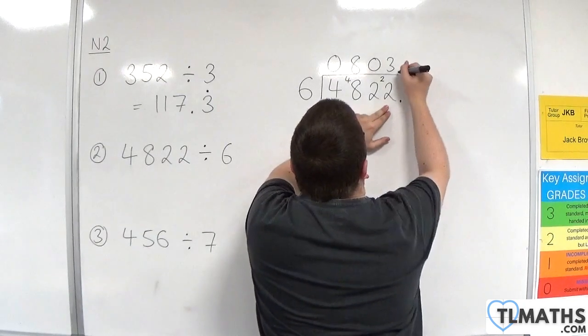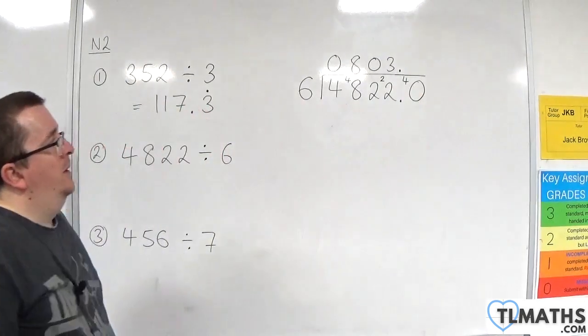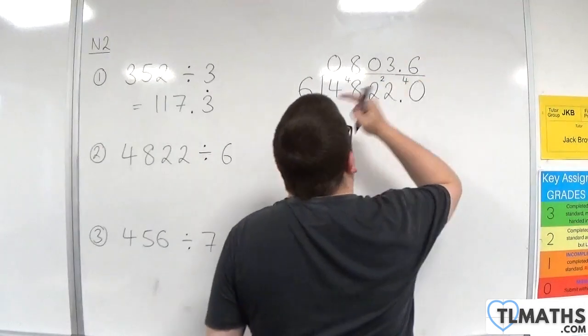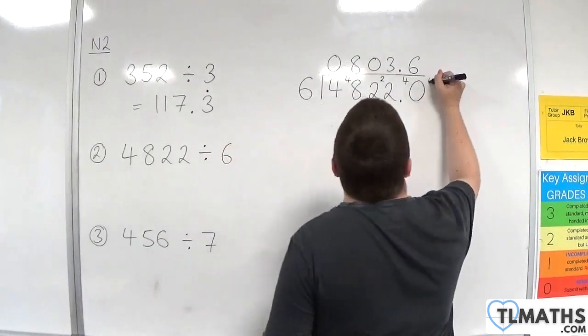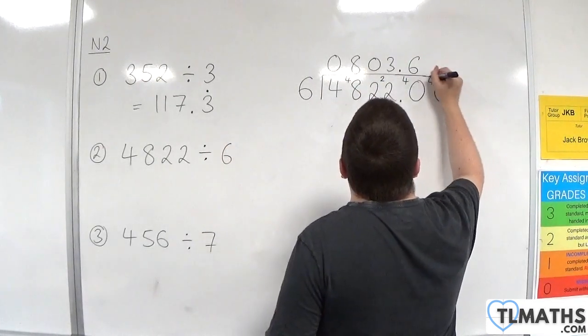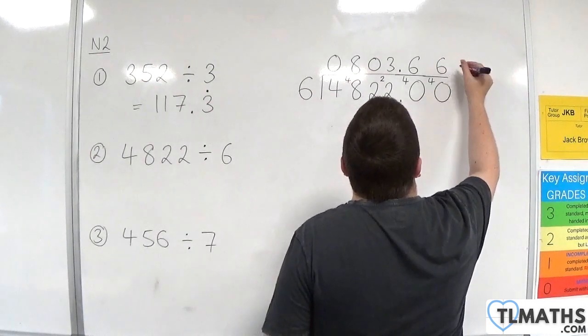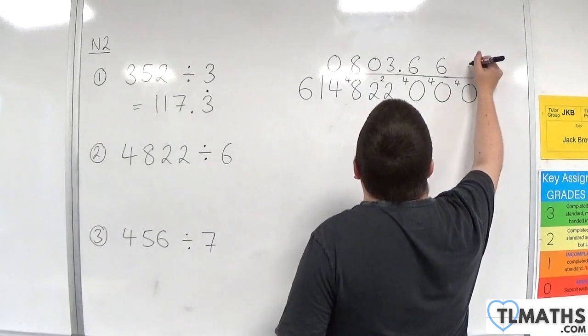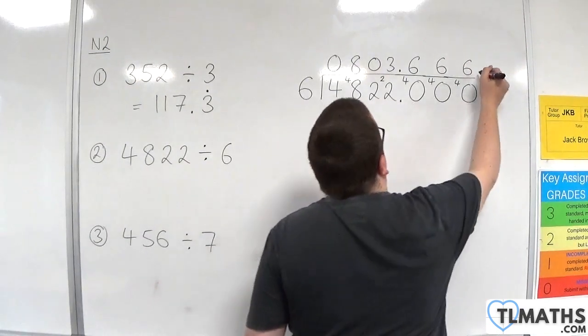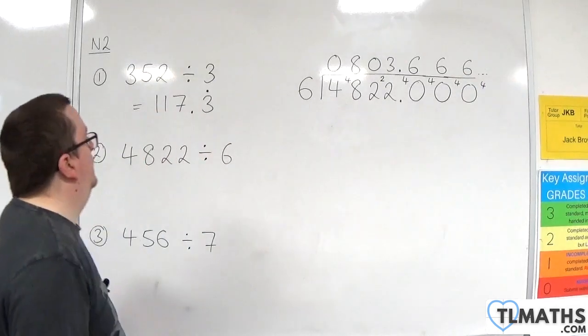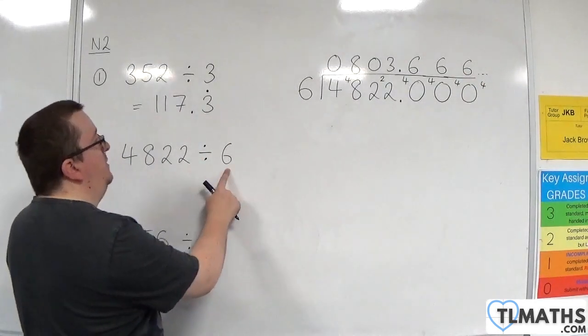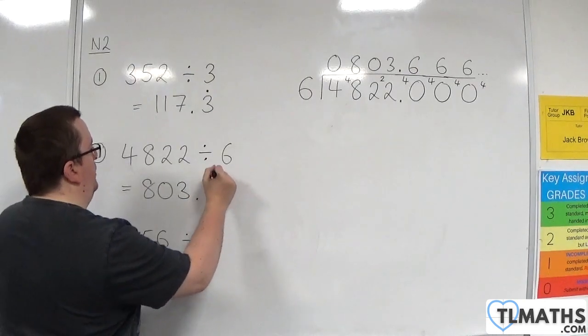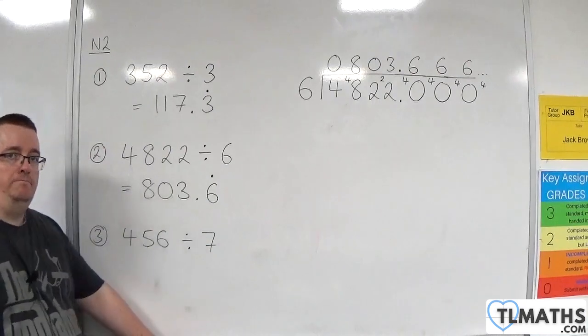We're going to have to bring in a 0 and go to decimal points. 6s into 40 go 6 because 6 times 6 is 36 with 4 left over. Bring in another 0. 6 into 40 go 6 with 4 left over, and so on. 4822 divided by 6 is 803.6 recurring.